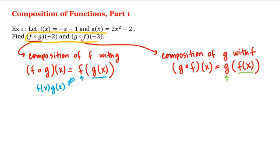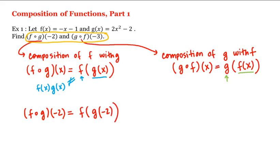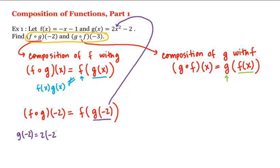So let's compute our two values. f composed with g of negative 2 is equal to f of g of negative 2. So what is g of negative 2? We plug negative 2 in wherever we see an x: g of negative 2 is equal to 2 times negative 2 quantity squared minus 2, which is 2 times positive 4, which is 8, minus 2, or 6.